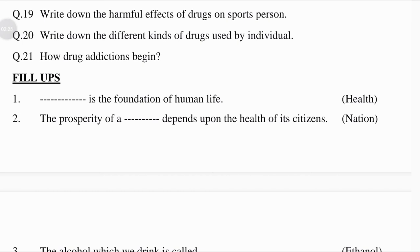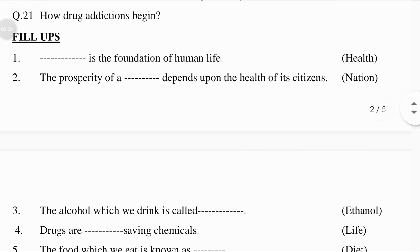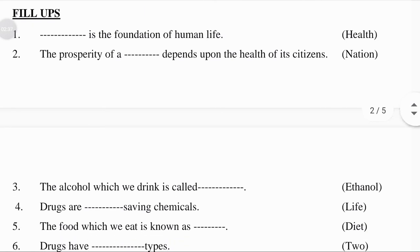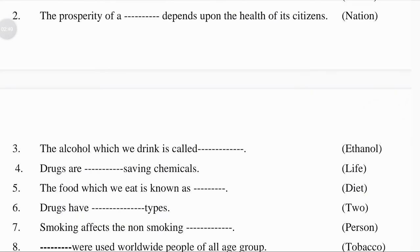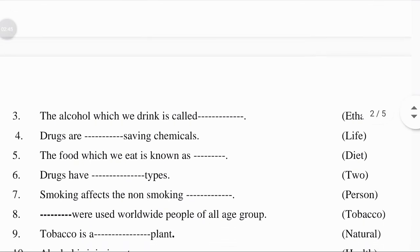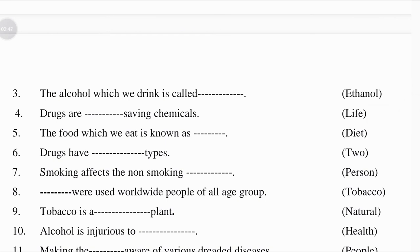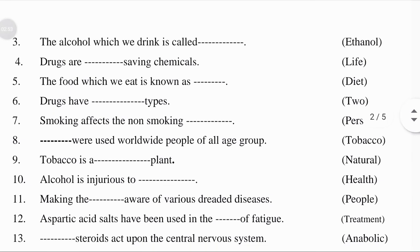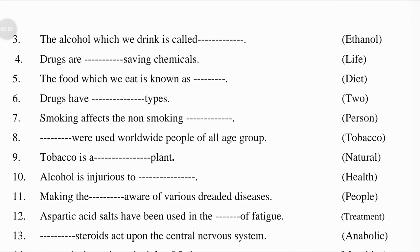Now fill in the blanks. Dash is the foundation of human life — answer: health. The prosperity of dash depends upon the health of its citizens — answer: nation. The alcohol which we drink is called ethanol. Drugs are dash saving chemicals — answer: life saving chemicals. The food which we eat is known as diet. Drugs have dash types. Smoking effects non-smoking persons.